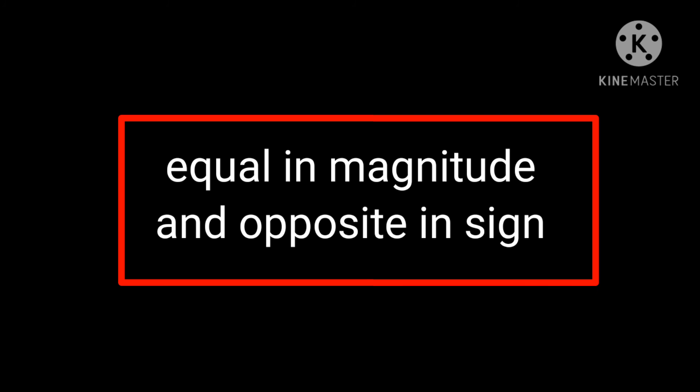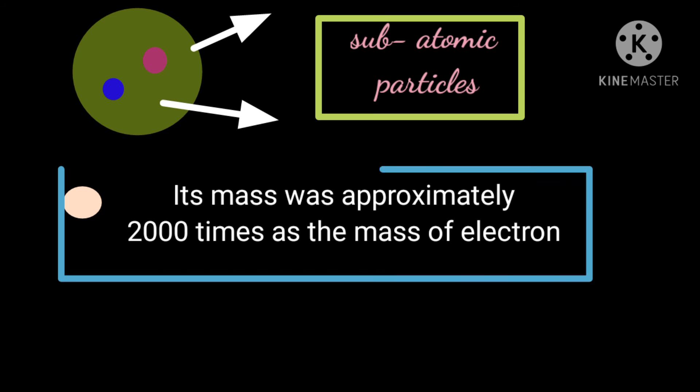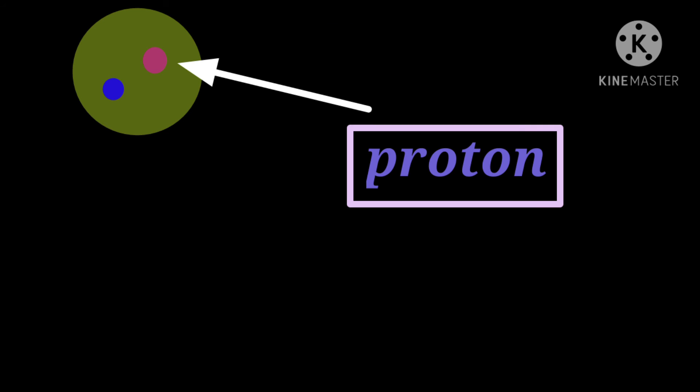This subatomic particle had a charge equal in magnitude but opposite in sign to that of the electron. Its mass was approximately 2000 times that of the electron. It was given the name proton.